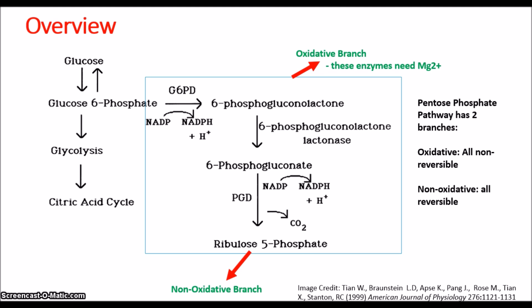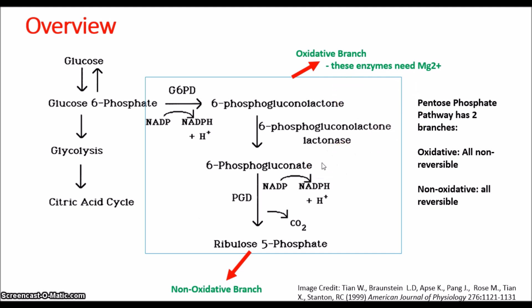This is just an overview slide. The pentose phosphate pathway has two branches. First, there's the oxidative branch and all these reactions are going to be non-reversible. The enzymes require magnesium 2+. Glucose 6-phosphate is going to come in from glucose and then it's going to become 6-phosphoglycolactone, then 6-phosphoglycanate, and then ribulose 5-phosphate. I'm going to go into these reactions in greater depth so you'll get a better understanding with tips and tricks to remember them.